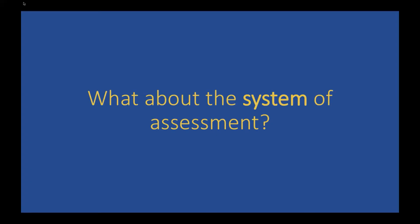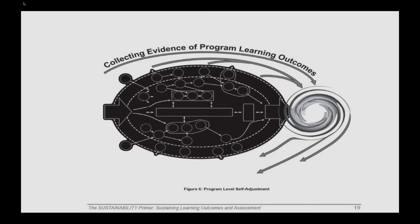What about the system of assessment? Here's a representation of what we're doing at the program learning outcome level. This is from a book called the Sustainability Primer, part of this framework. We see a general vision of what a program might look like — we're collecting evidence of the program learning outcomes at the course level, much like what Christy said. We're choosing the course learning outcomes that align with the program learning outcomes, doing that assessment, and then reflecting on what we need to change at the program level based on what we found.